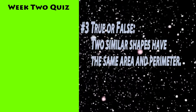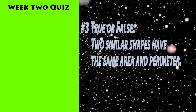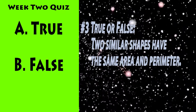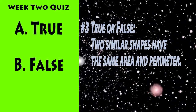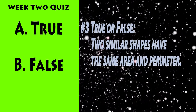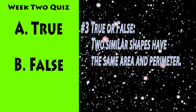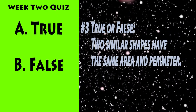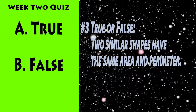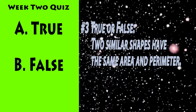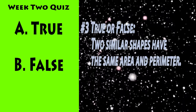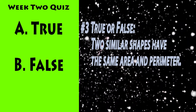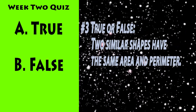Number 3. True or false — two similar shapes have the same area and perimeter. A: true, B: false. True or false — two similar shapes have the same area and perimeter.